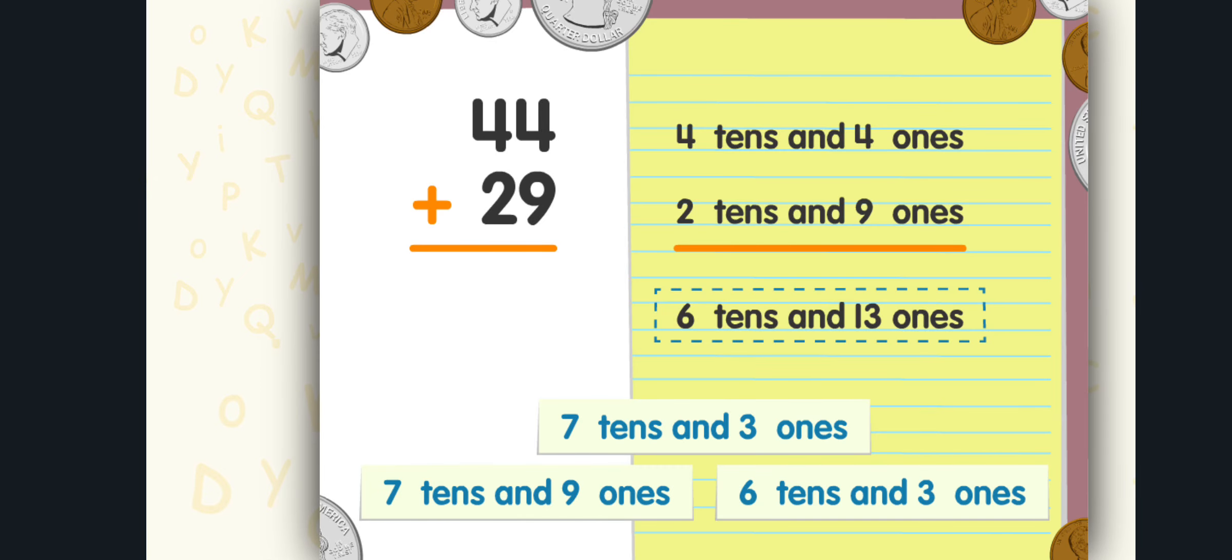Four tens and four ones plus two tens and nine ones equals six tens and thirteen ones. That's right! The sum is seventy-three.